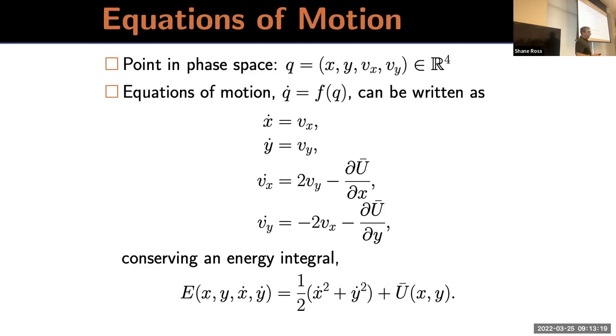The motion of the particle, comet, or spacecraft is moving in an effective potential that takes into account the gravity of both masses and the centripetal force. We also have a Coriolis force being in the rotating frame. This is one way to write the equations of motion, showing Coriolis terms and taking the negative gradient of an effective potential. This conserves an energy integral related to the Jacobi constant.